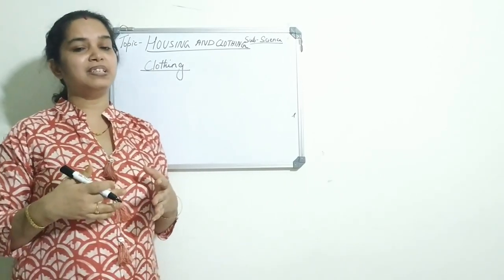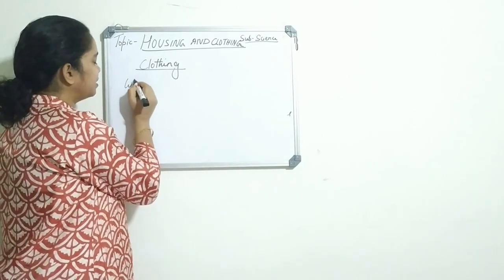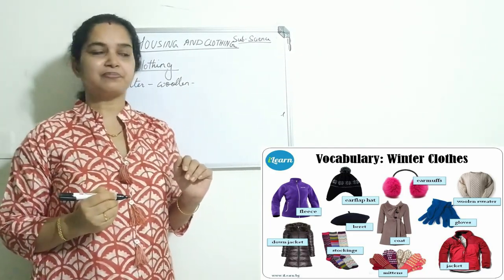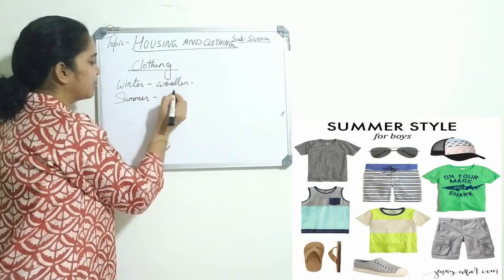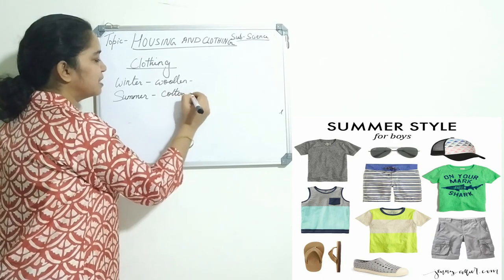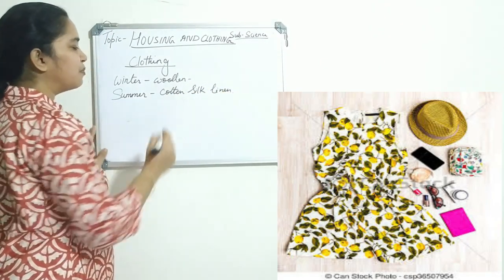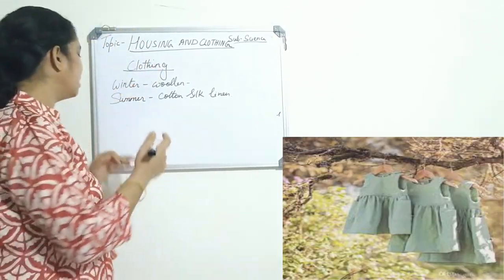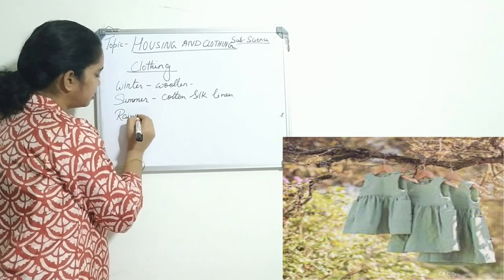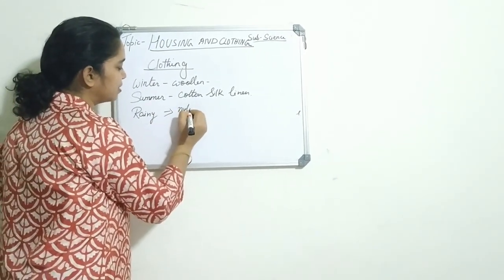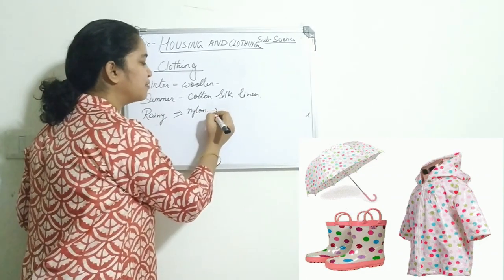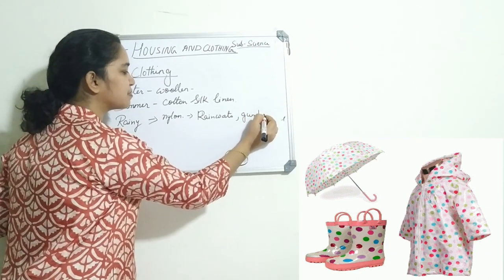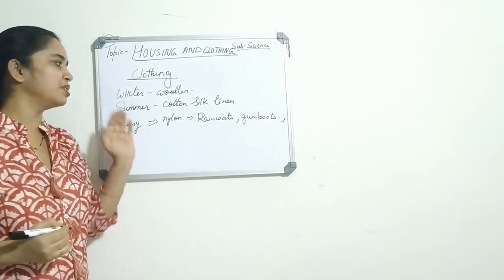We wear different types of clothes in different seasons. In winter, we use woolen clothes, which keep us warm. In summer, we wear clothes made up of cotton, silk, and linen — so as to absorb sweat and keep ourselves cool and comfortable. In the rainy season, we wear clothes made up of nylon and plastic, such as raincoats and gumboots.